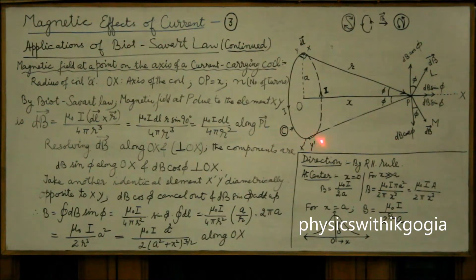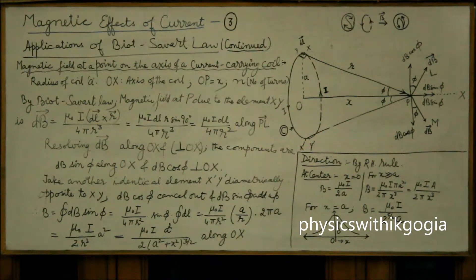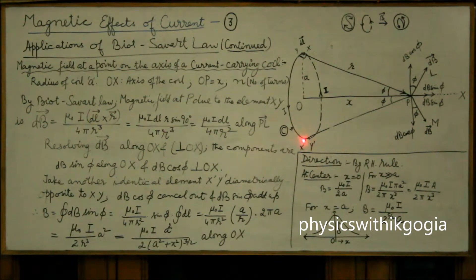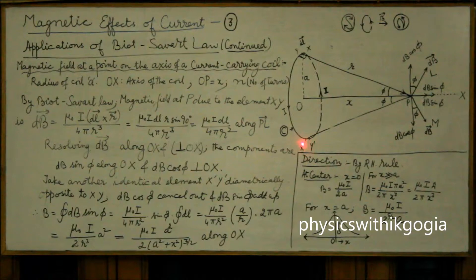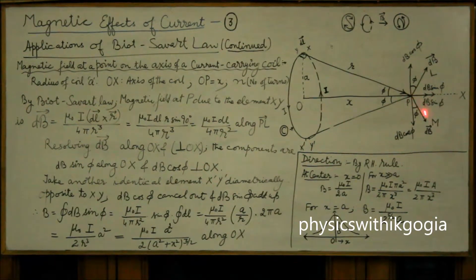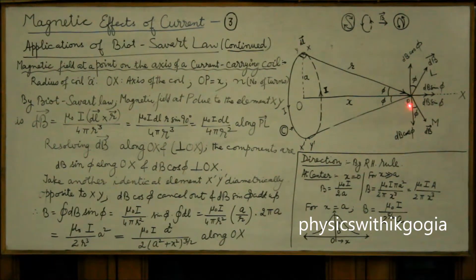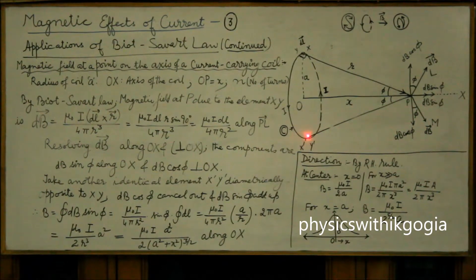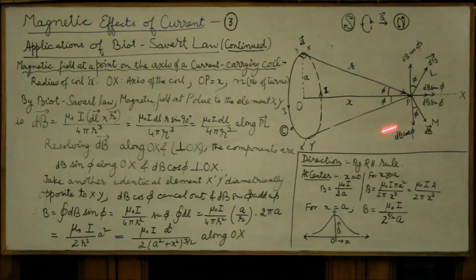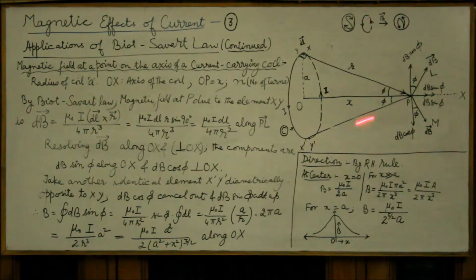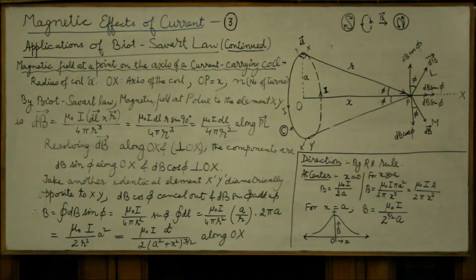Similarly, you can take another element X'Y' which is identical to XY and diametrically opposite to it in the coil. The field due to X'Y' will have same magnitude dB but different direction perpendicular to its vector r'. So this is dB due to X'Y'. This is dB due to XY.